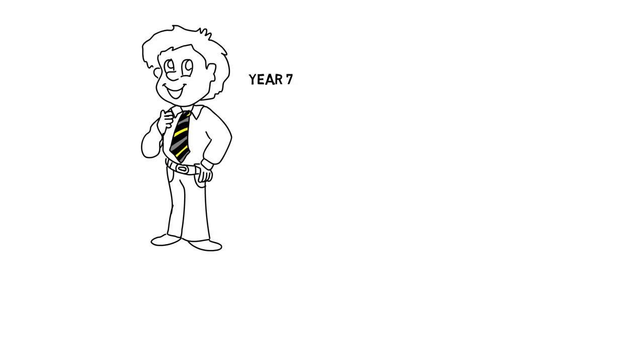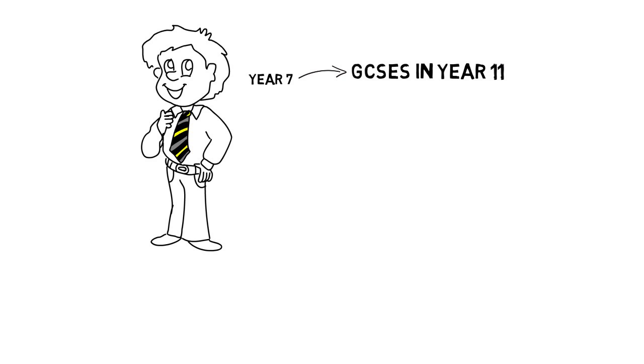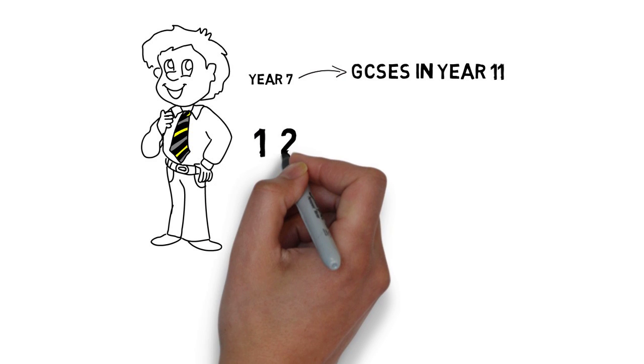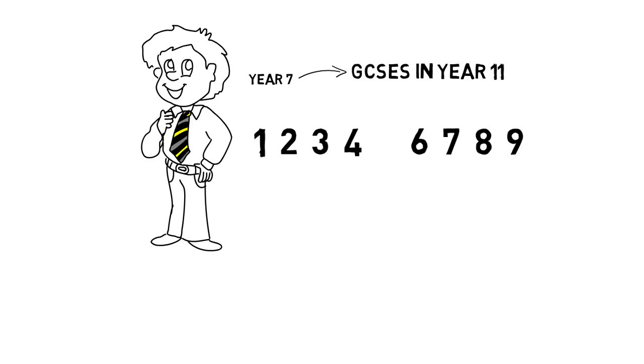We wanted to make sure our assessment system worked all the way through from Year 7 to GCSEs in Year 11. You may know that GCSEs will now be graded 1 to 9, with Grade 9 being the top grade.